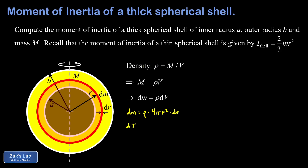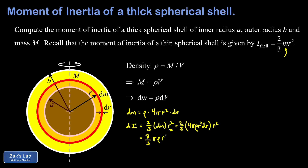The moment of inertia contribution of our thin spherical shell is obtained by plugging dm and the radius into the thin spherical shell formula. A thin spherical shell has moment of inertia two-thirds times the mass dm times the radius squared. Substituting our expression dm equals 4 pi rho r squared dr and multiplying by r squared, we clean up to get dI equals eight-thirds pi rho r to the fourth dr.